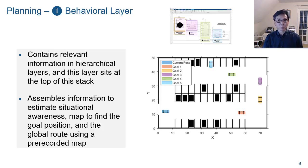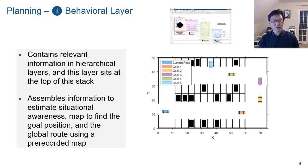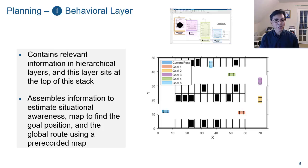It also uses localization to estimate the current vehicle position, a map to find the global position, and a global route from a mapping service, or in this particular case, from pre-recorded maps.